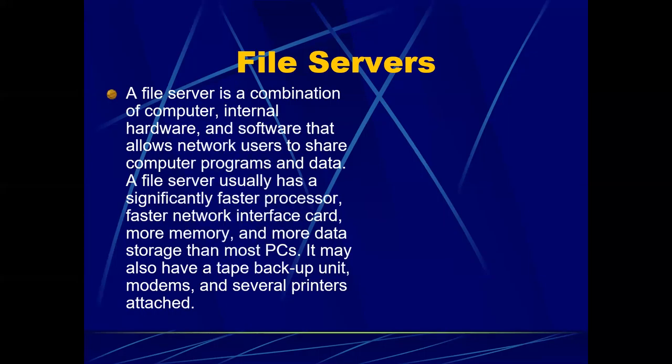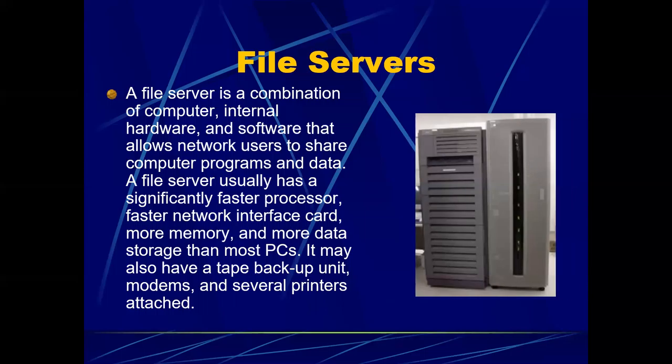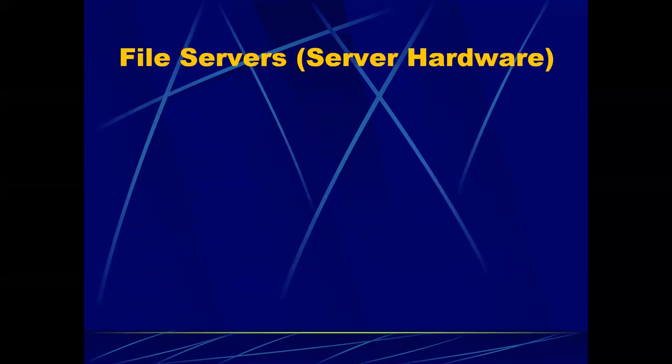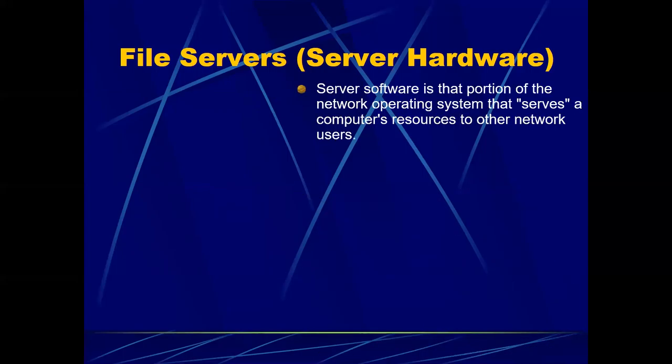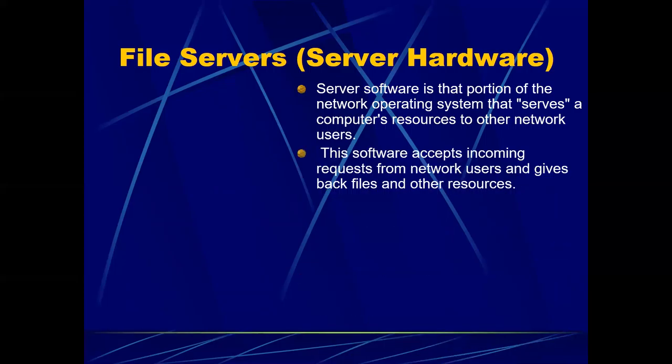What are file servers? A file server is a combination of computer hardware and software that allows network users to share computer programs and data. A file server usually has a significantly faster processor, faster network interface card, more memory, and more data storage than most PCs. The software server is a portion of the network operating system that serves a computer's resources to other network users, accepting incoming requests and returning files and other resources.